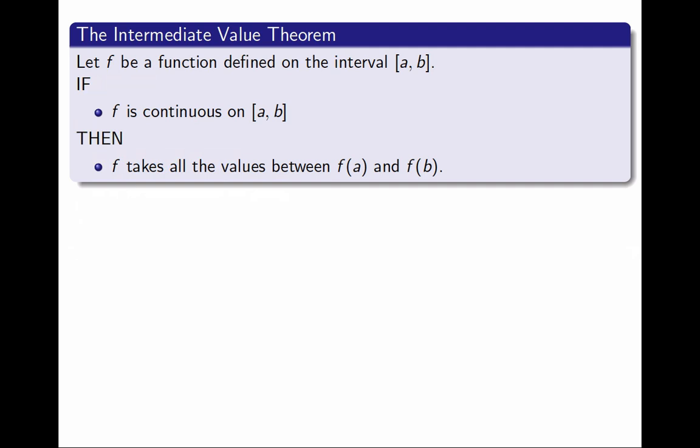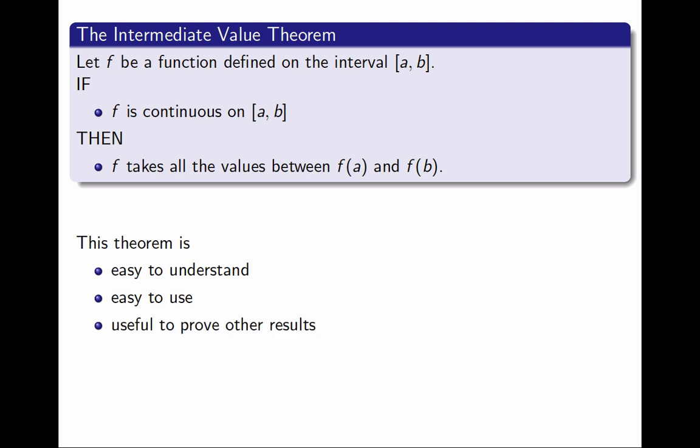This theorem is easy to understand and we believe it's true — I hope I persuaded you of that — because it's a theorem we were already using before we called it a theorem. It is also useful when doing other theoretical proofs in analysis; it appears in various places. However, it is difficult to prove. If we want to do a formal rigorous proof from the definition of continuity, it is quite technical. You will see this proof normally in a rigorous analysis course where you define the reals axiomatically. In this video, I am not going to include a proof. For our purposes, it is enough that we understand the statement of this theorem, that we understand it is an important property of continuous functions, and that every time we use it — and we use it often — we understand we are using a property of continuous functions.